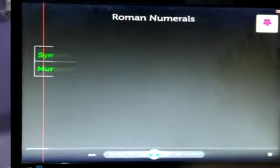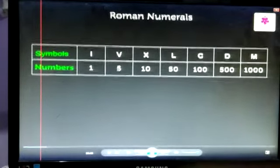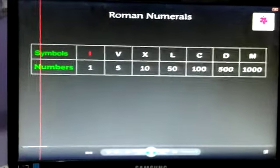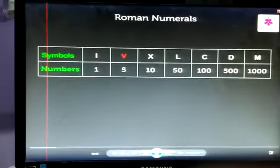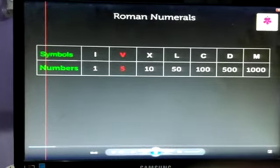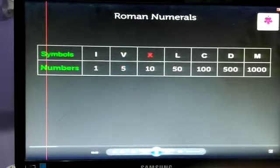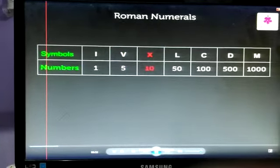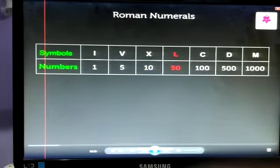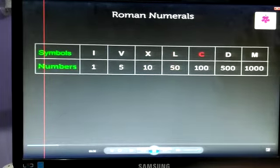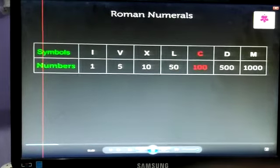Here are the letters used to write the numbers. The symbol I is equal to 1. V is equal to 5. X is equal to 10. L is equal to 50. C is equal to 100.